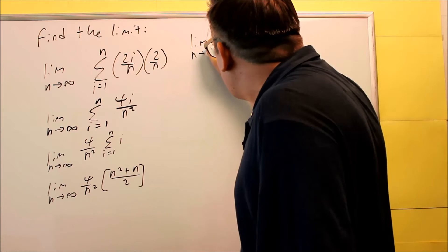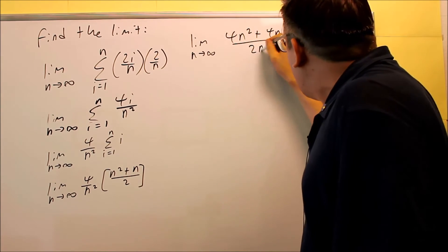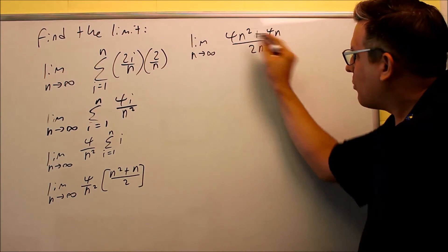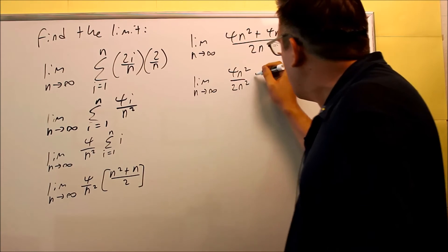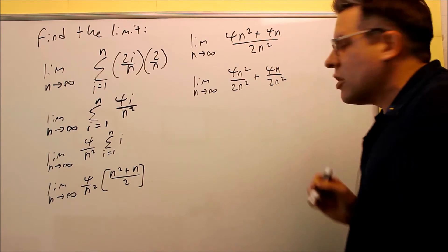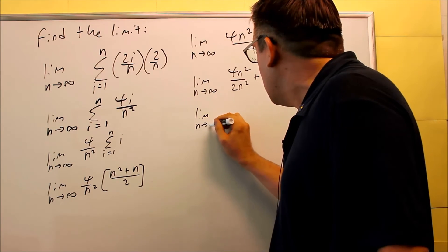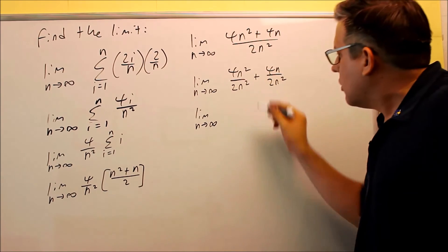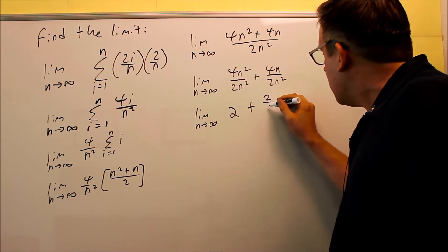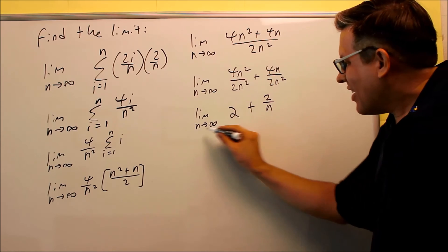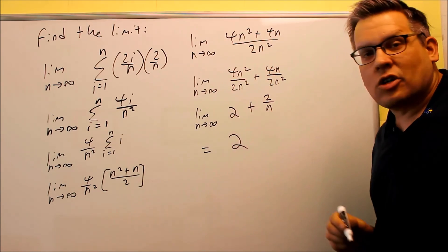Now that I've multiplied it out, I separate each term individually so I can find the limit: 4n squared over 2n squared, and then 4n over 2n squared. Once broken up, I reduce those. The first turns into 2. The other one becomes 2 over n. As n goes to infinity, the 2 over n term goes to 0, which means my final answer for this limit problem is 2.